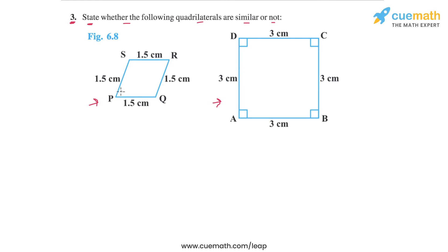In fact, the first quadrilateral is a rhombus in which the angles at the vertices—angle P, angle Q, angle R, angle S—all of these angles are different from 90 degrees, while the second quadrilateral you can see is a square. All the angles at the vertices are 90 degrees and all the sides are equal.